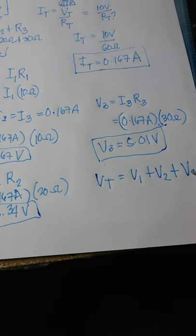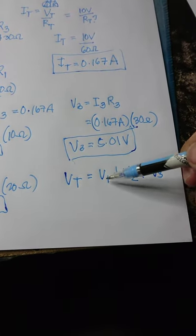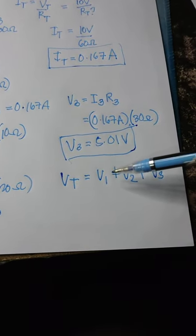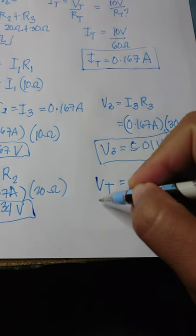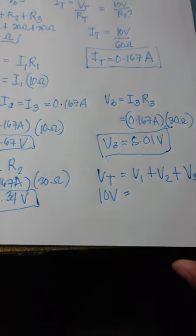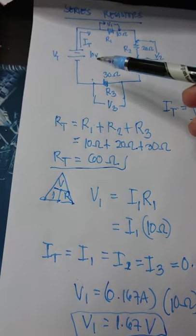So therefore, the voltage drop of each resistor is represented by V1, V2, and V3. We know that the total voltage is 10 volts.